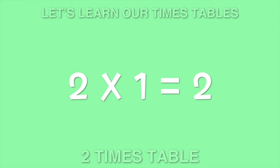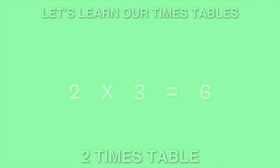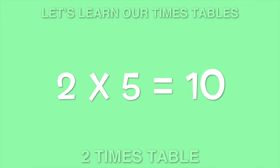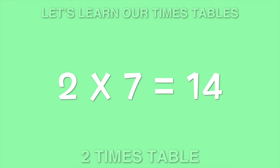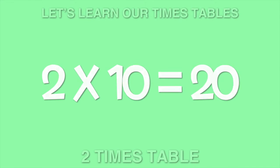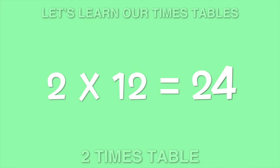Two times one is two. Two times two is four. Two times three is six. Two times four is eight. Two times five is ten. Two times six is twelve. Two times seven is fourteen. Two times eight is sixteen. Two times nine is eighteen. Two times ten is twenty. Two times eleven is twenty-two. Two times twelve is twenty-four.